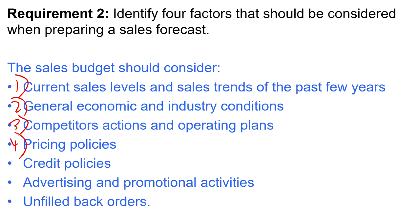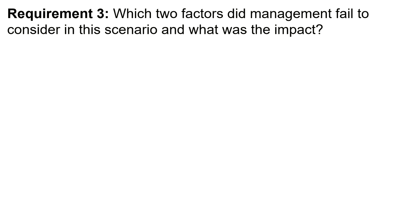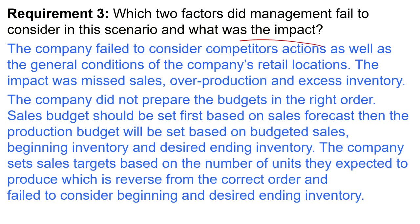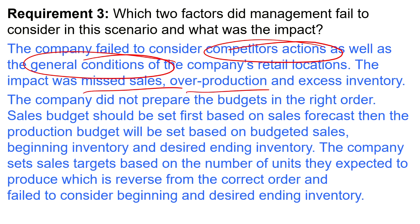The third requirement: which two factors did management fail to consider, and what was the impact? The company failed to consider competitors' actions as well as the general conditions of the company's retail locations. The impact was missed sales, overproduction, and excess inventory. Additionally, the company did not prepare the budgets in the right order — the sales budget should be set first based on the sales forecast, then the production budget set based on budgeted sales, beginning inventory, and desired ending inventory. The company set sales targets based on units expected to produce, which is reversed from the correct order.